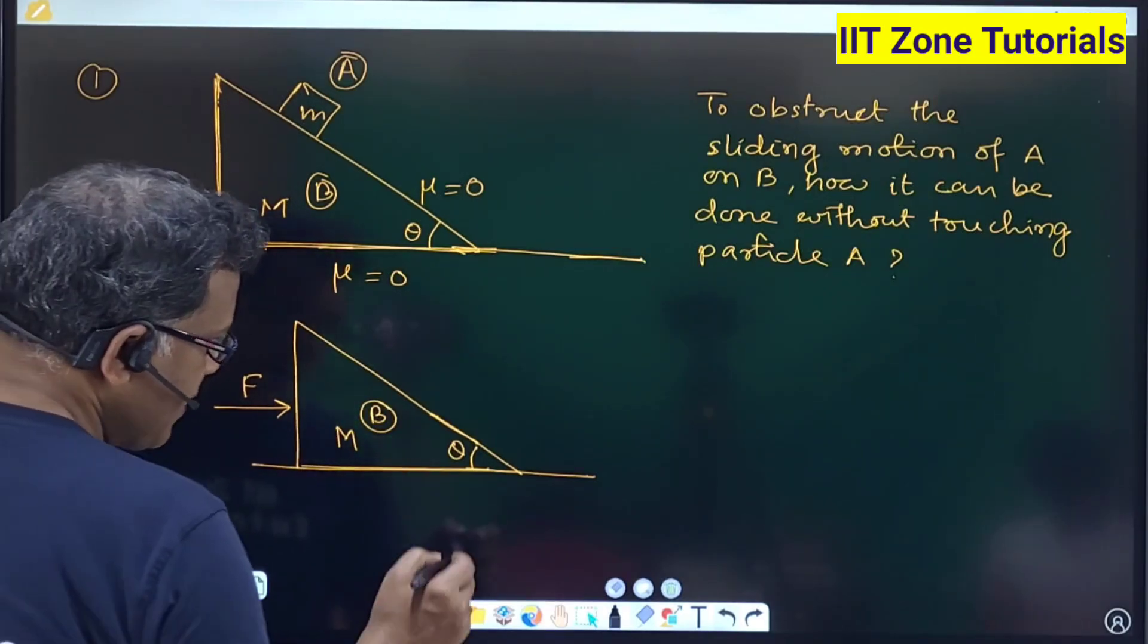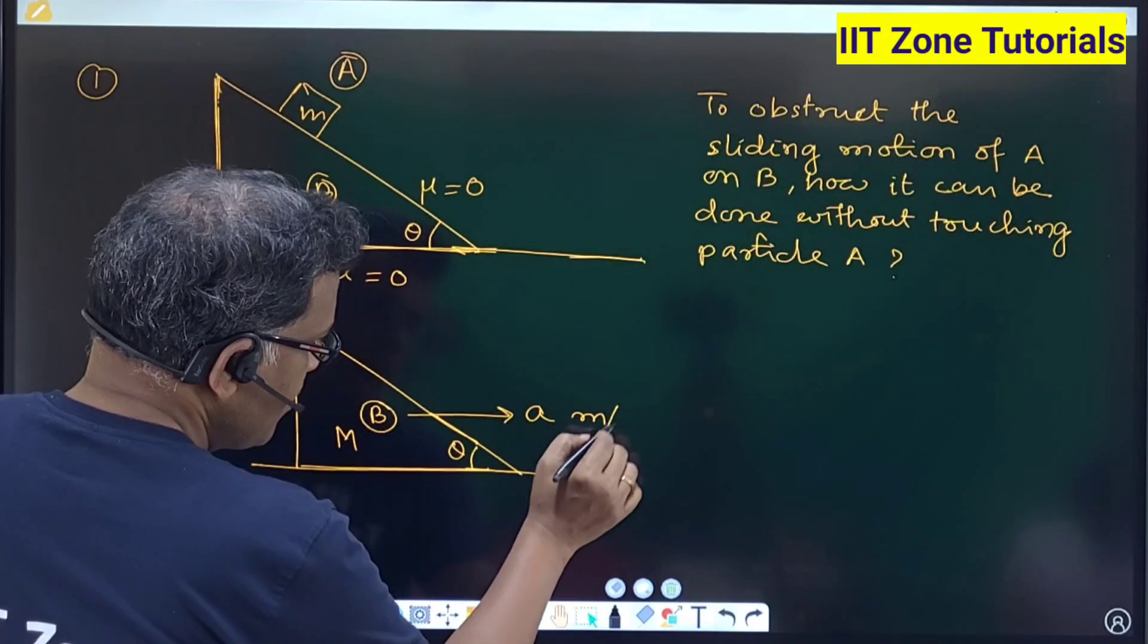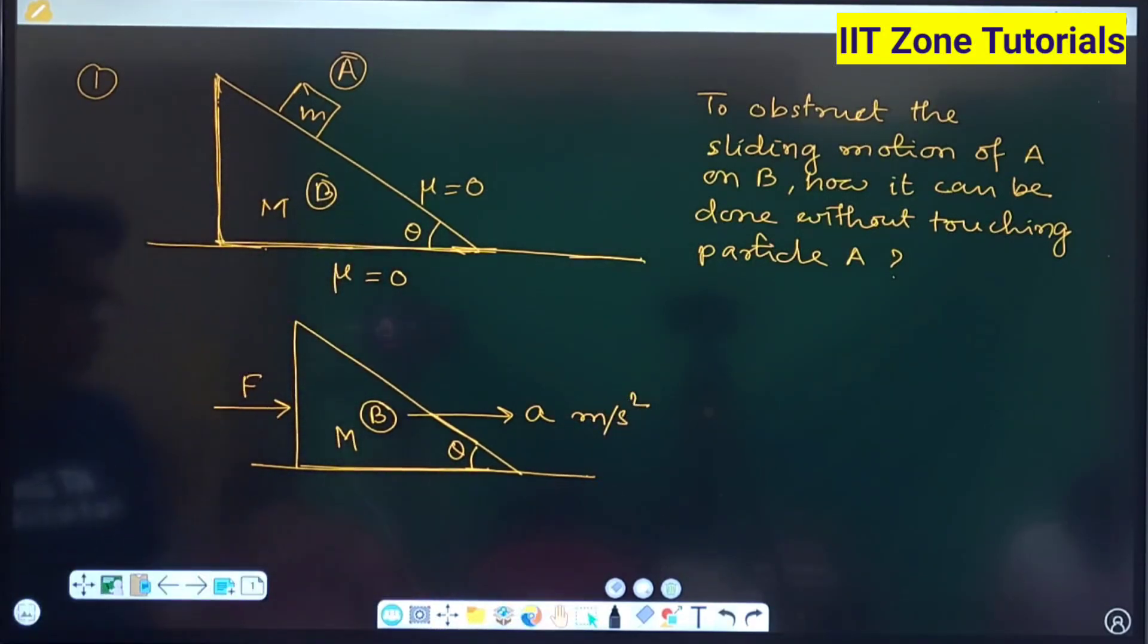block B, right. As a result there will be a resulting acceleration something a meter per second square must be achieved by the mass B, right.